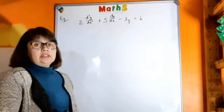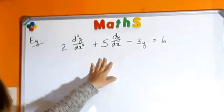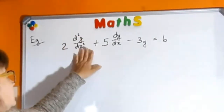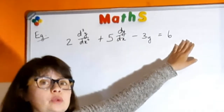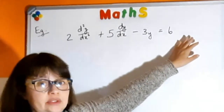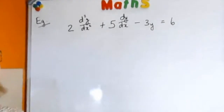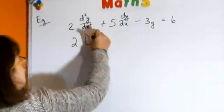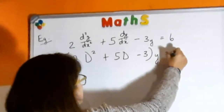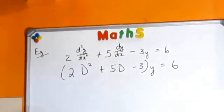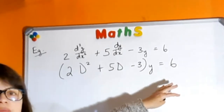Let's have a look at this example. We're working with a second order differential equation where the dependent variable is y and the independent is x. It is equal to a value of 6, which means you are working with a forced system, or non-homogeneous differential equation. If we use D operators, you can write it as shown.